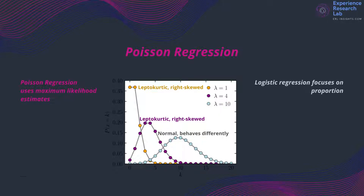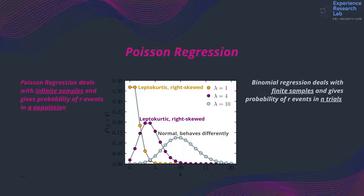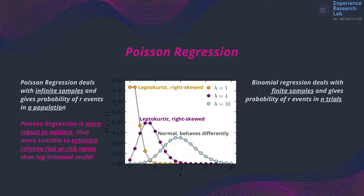Poisson regression analyzes rates using maximum likelihood estimation, an iterative procedure to obtain parameter estimates. This iteration log behaves differently from logistic regression, which focuses on proportion. In the case of binary outcomes, some tend to associate Poisson regression with binomial regression. However, they serve different types of samples. Binomial regression deals with binary outcomes data from a finite sample — it gives the probability of getting R events out of N trials. Meanwhile, Poisson regression handles binary outcomes data from an infinite sample and gives the probability of getting R events in a population. Another difference is that the Poisson model is more robust to outliers than the log binomial models.